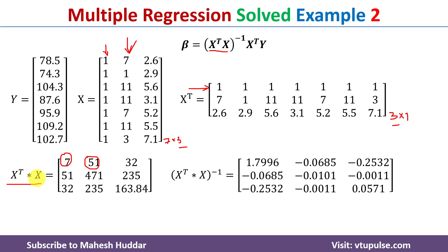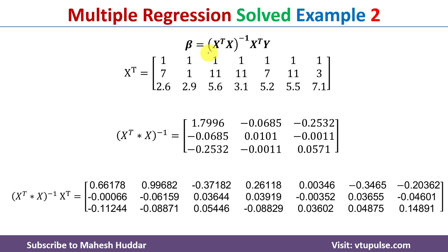Once we have X^T·X, the next step is to take its inverse. You can follow any online tutorial or use a scientific calculator to compute the inverse of this 3×3 matrix. The inverse matrix is computed and shown here. We then need to multiply this inverse by X-transpose. The inverse is 3×3 and X-transpose is 3×7, so the 3s cancel and the result is a 3×7 matrix.